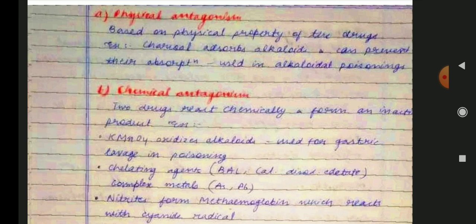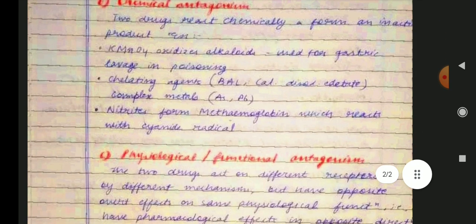Physical antagonism is based on physical properties. For example, charcoal can adsorb alkaloids — meaning it attracts them to its surface — and prevents their absorption. This is used in alkaloidal poisoning.